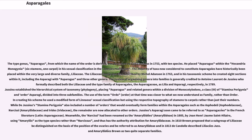Meanwhile, the Narcissi had been renamed as the Amaryllides in 1805 by Jean-Henri Jaume Saint-Hilaire, using Amaryllis as the type species rather than Narcissus, and thus has the authority attribution for Amaryllidaceae. In 1810, Brown proposed that a subgroup of Liliaceae be distinguished on the basis of the position of the ovaries and be referred to as Amaryllidii, and in 1813 de Candolle described Liliaceae and Amaryllidaceae as two quite separate families.